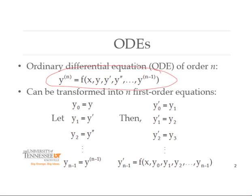You can transform an nth order ODE into a system of n first-order equations by making simple variable substitutions and exploiting the sequential relationship of derivatives — meaning the second derivative is the derivative of the first derivative, the third derivative is the derivative of the second derivative, and so forth. Starting with substitutions: the original y is called y-zero, y-sub-one is the first derivative, y-sub-two is the second derivative, and so forth, so that the index always matches the derivative. So y-sub-(n minus one) is the (n minus first) derivative.